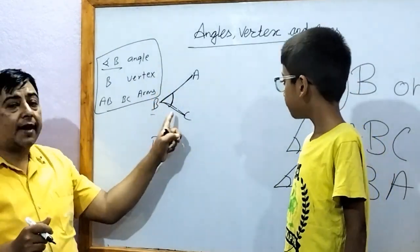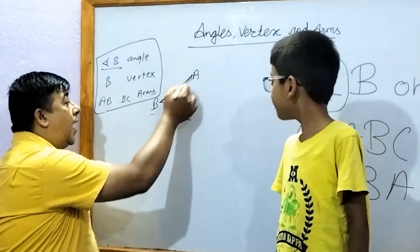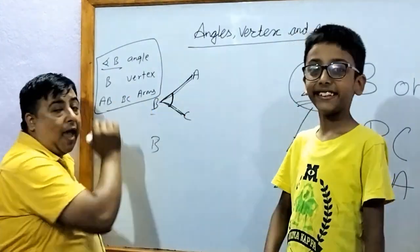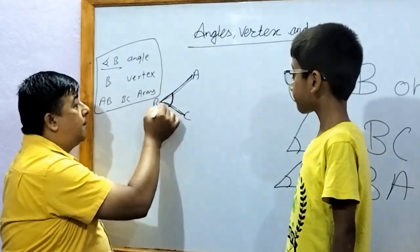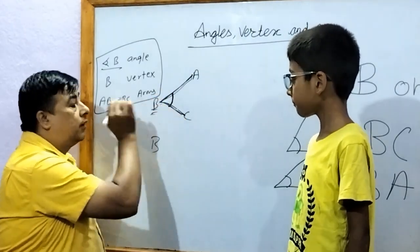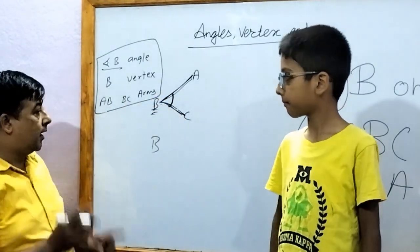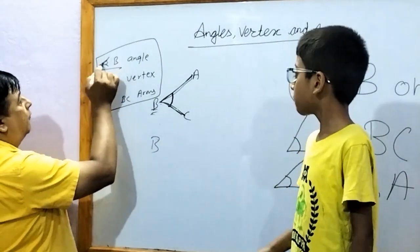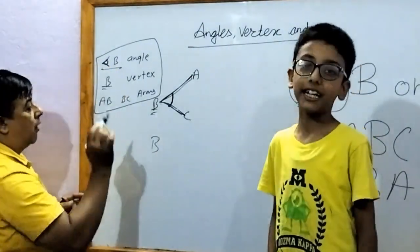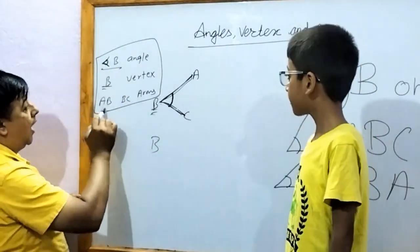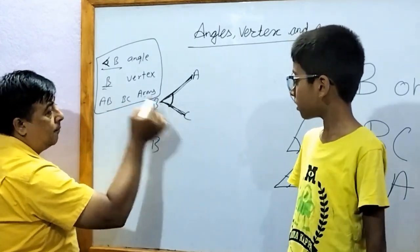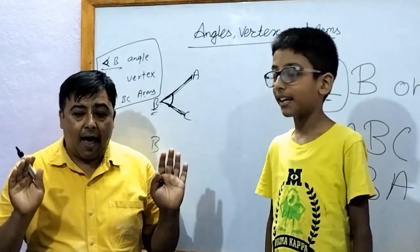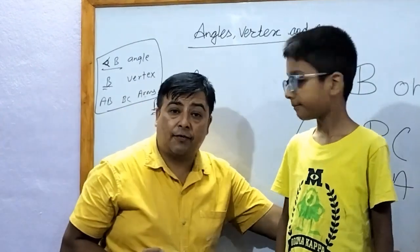When two lines meet at a point, those two lines are called the arms. The space they form is called the angle. The point where they meet is called the vertex. For the vertex, you write just the letter. For the angle, you must write the angle symbol.